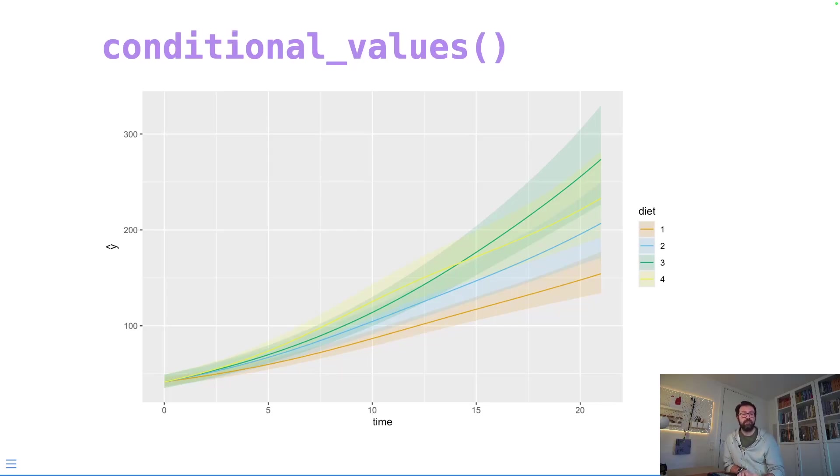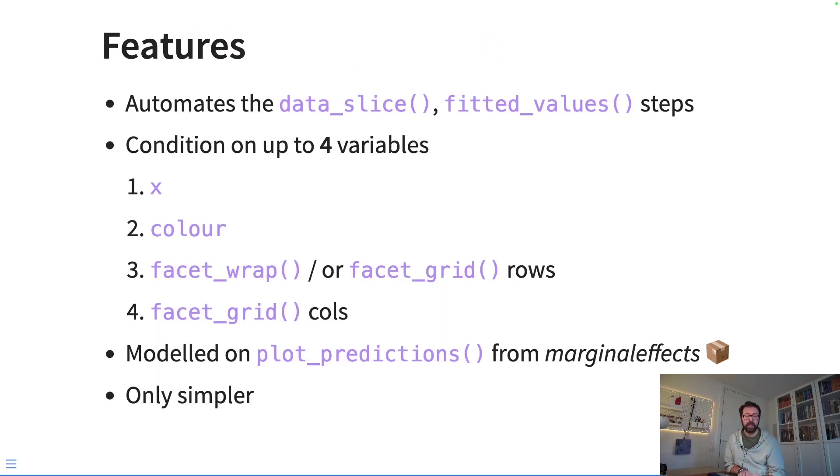So let's just go through some of the main features. It automates the data_slice and fitted_value steps. You just need to specify the variables you want to condition on, and you can condition on up to four different variables at the moment. The first variable gets mapped to the x-axis, so that's the sort of main variable that we're conditioning on. The second variable will be mapped to the color channel, as we saw here with diet. And then if you specify a third variable, that will be mapped to the facet_wrap channels.